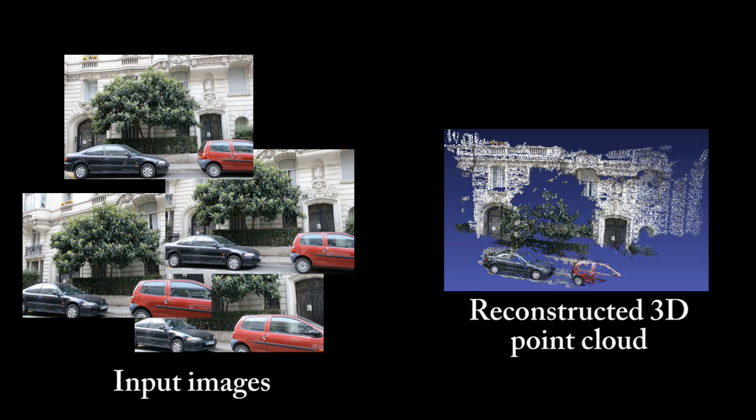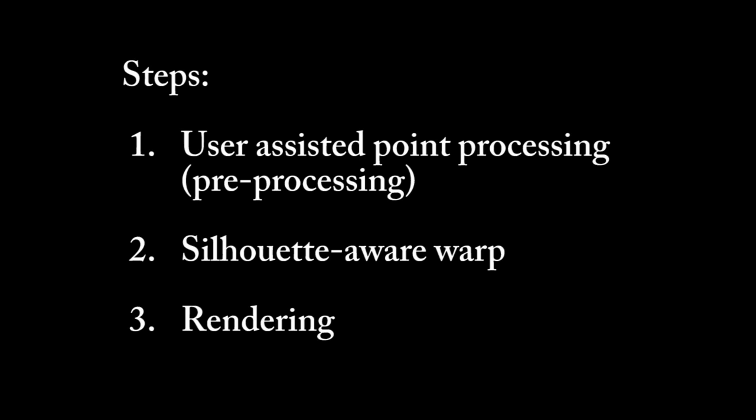We start with 10-12 input images and use computer vision algorithms to calibrate cameras and create a dense point set. Our approach has three main steps: user-assisted point processing, Silhouette Aware Warp, and final rendering.